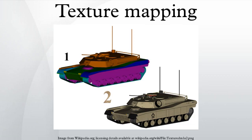Texture mapping is a method for adding detail, surface texture, or color to a computer-generated graphic or 3D model. Its application to 3D graphics was pioneered by Edwin Catmull in 1974. A texture map is applied to the surface of a shape or polygon. This process is akin to applying pattern paper to a plain white box.